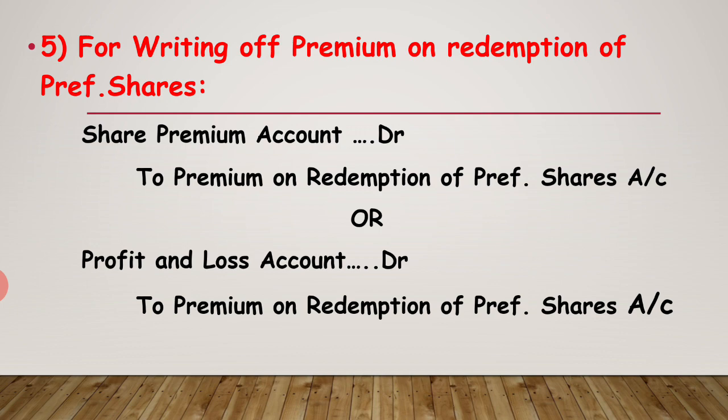Now next: writing off premium on redemption of preference share. Remember students, first chance is share premium. Suppose sufficient amount was not in the share premium, then we use the P&L account. Suppose sufficient amount is given in the question for share premium, then we write: share premium account debit to premium on redemption of preference share. And suppose share premium was not given, then we write: profit and loss account debit to premium on redemption of preference share. And suppose share premium is not sufficient but some amount is given in share premium, then we write: share premium account debit, profit and loss account debit to premium on redemption of preference share.